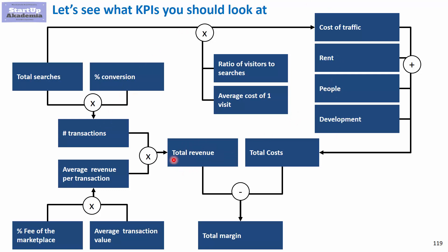In terms of KPIs, what I would personally pick is: obviously the average revenue per transaction, which is important; the total number of searches, since that's what you want to drive; and the conversion rate. I don't separately need the number of transactions because it's already captured by those. I'd also pay attention to the ratio of visitors to searches.